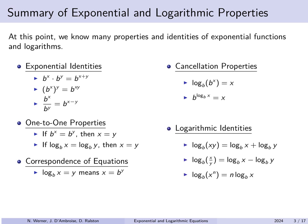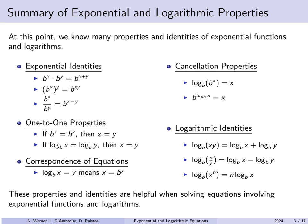Because logarithms and exponentials are inverse functions, and we know exponential identities, we get corresponding logarithmic identities: log_b(xy) = log_b(x) + log_b(y); log_b(x/y) = log_b(x) - log_b(y); and log_b(x^n) = n·log_b(x). Note that we do not have an identity for log_b(x + y). These properties and identities are helpful when solving equations involving these functions.